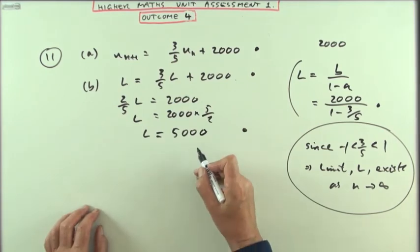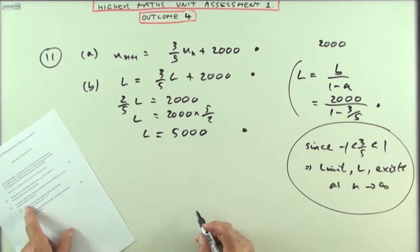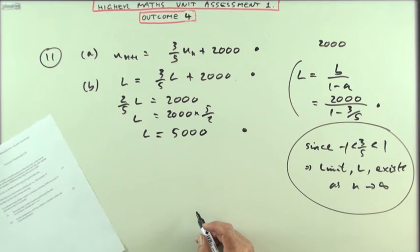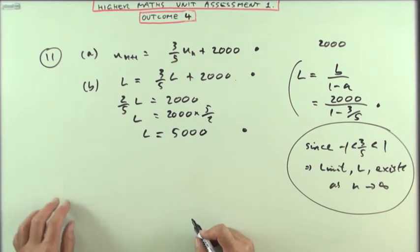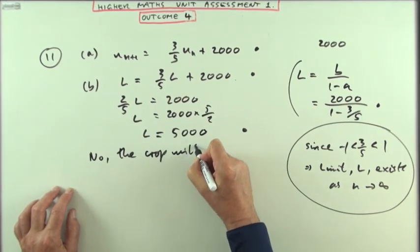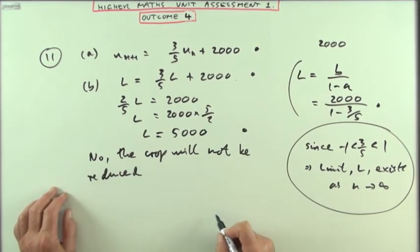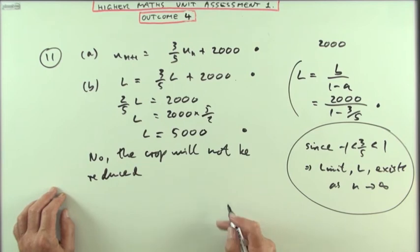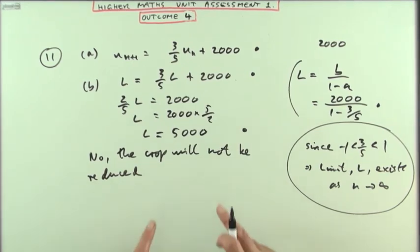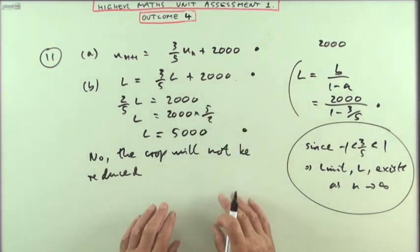And then the final mark is for making a conclusion, according to the criteria here. It says, if the number of beetles exceeds 5,500, the crop will be reduced. And it says, will the number of beetles reduce the crop? Well, the answer is no. No. The crop will not be reduced, and there's no way around this. There's just lots of writing. No, the crop will not be reduced. That's worth no marks, even though it's correct, unless it's justified numerically. And you can't just say, oh, look, there's the numbers up here. You have to make a statement.